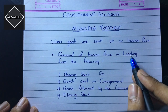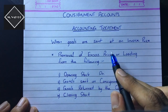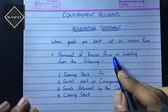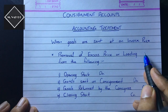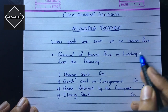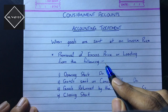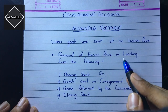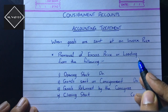Now what is loading? Loading is the difference between the invoice price and the cost price. Let's say the cost price of an item is 100 and the invoice price is 150. The difference between the invoice price and the cost price would be the loading — that is 150 minus 100 equal to 50 rupees.